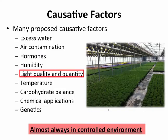Keeping all these in mind as potential causative factors is important. As we looked at all these different causative factors — and we're certainly going to highlight some of the work our former graduate student Joshua Craver worked on for his master's degree — one thing became very clear: these disorders almost always occurred in a controlled environment — greenhouses, high tunnels, growth chambers. The question then becomes what's the common thread in these controlled environments that might better explain why these lesions are actually happening. One that really stood out was light quality and/or quantity, which became a major focus of Joshua's master's research.